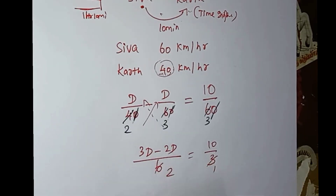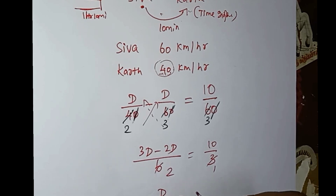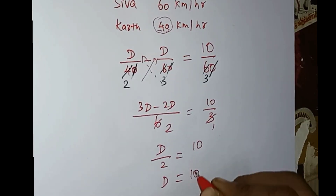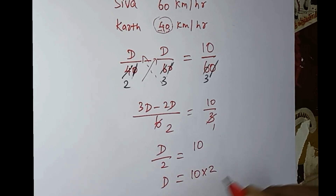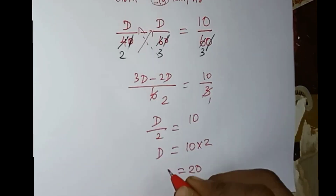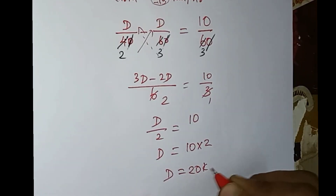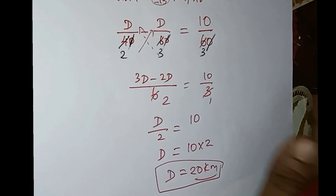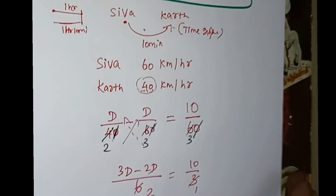So 3d minus 2d divided by the denominator equals 10 by 3. Therefore, distance equals 10 by 2, which gives us distance equal to 20 km. This is a shortcut you can use.